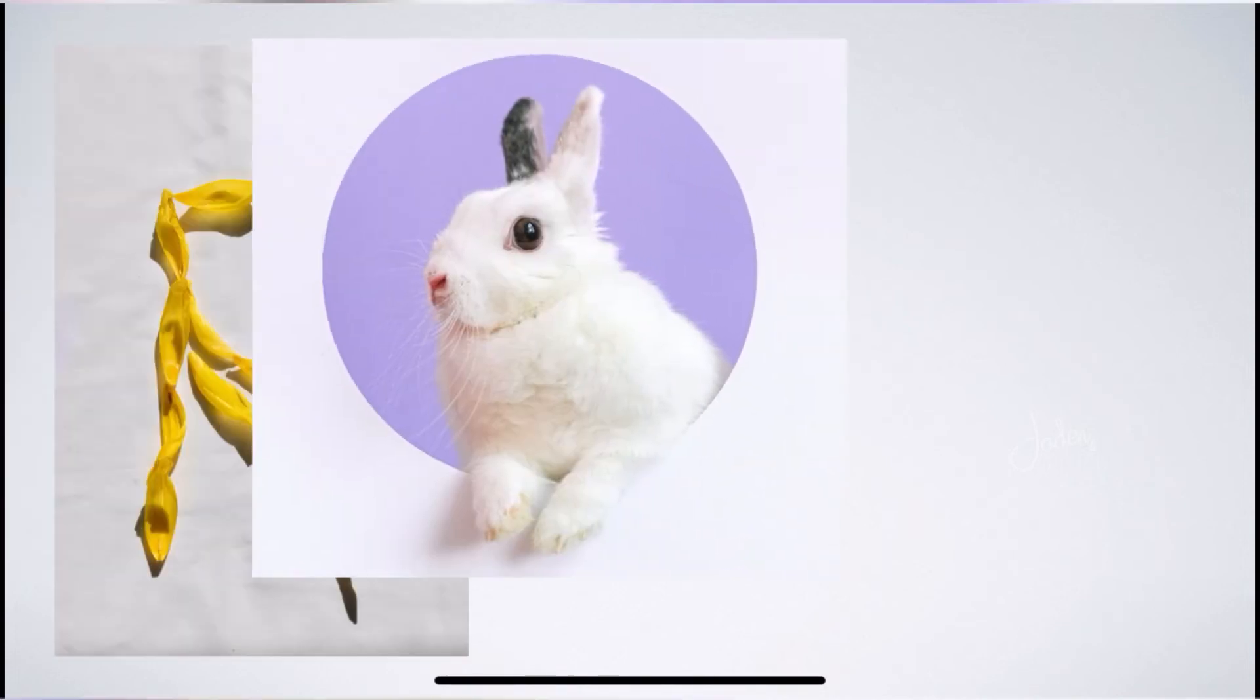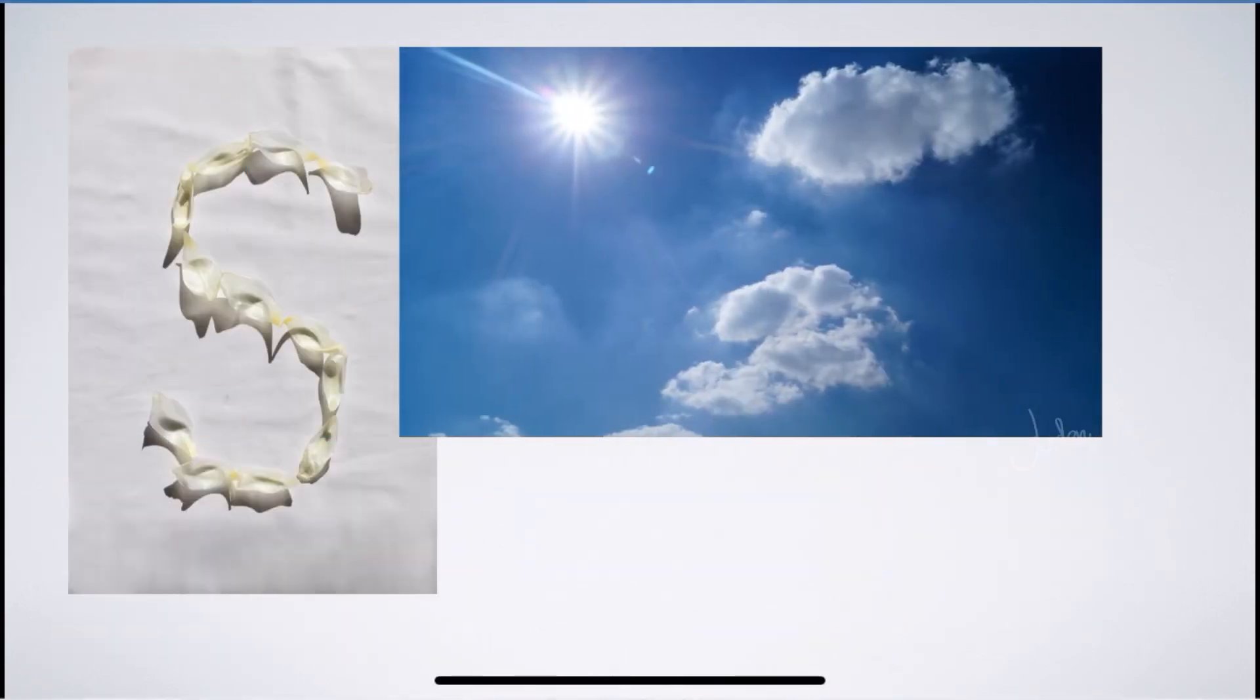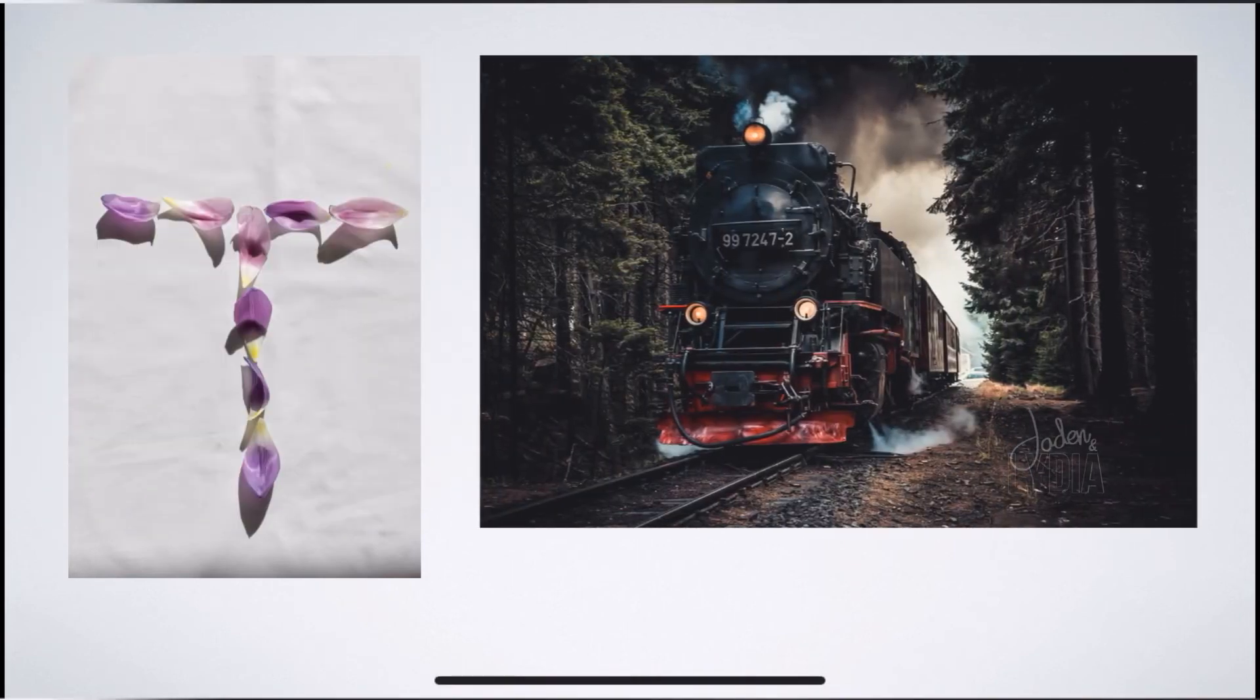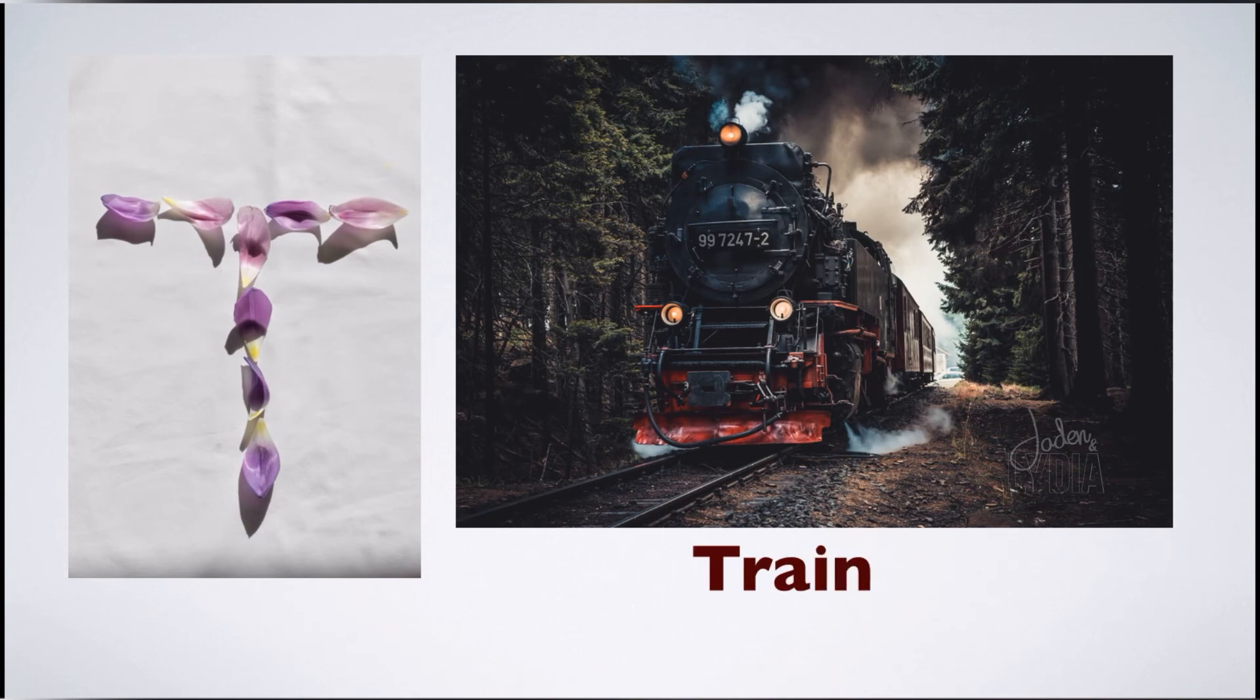R for Rabbit. S for Sun. T for Train. U for Umbrella.